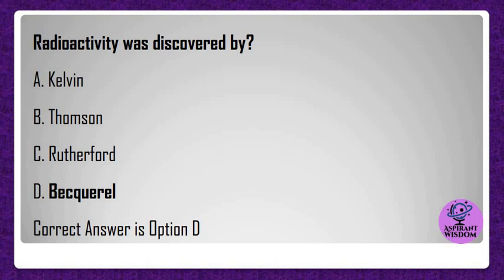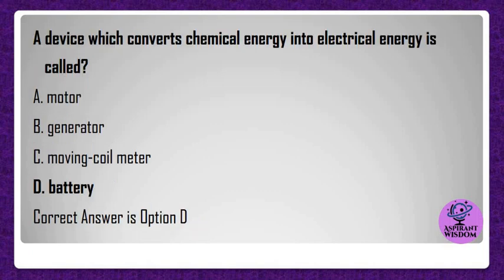A device which converts chemical energy into electrical energy is called? A) Motor, B) Generator, C) Moving coil meter, D) Battery. Correct answer is option D.